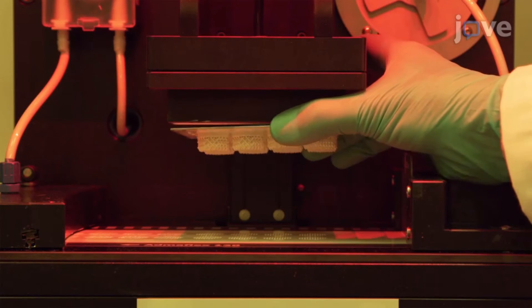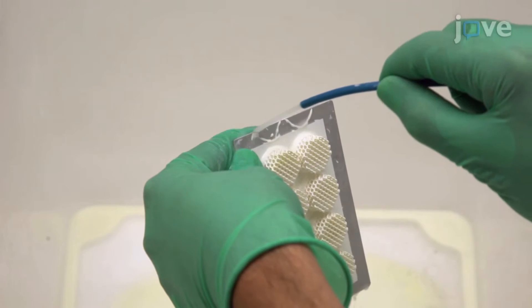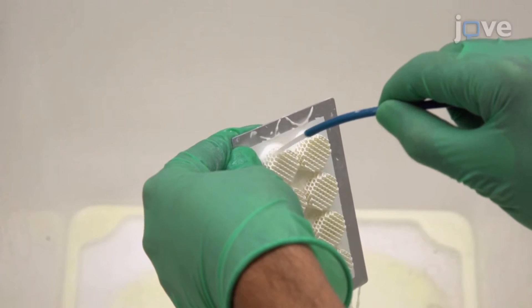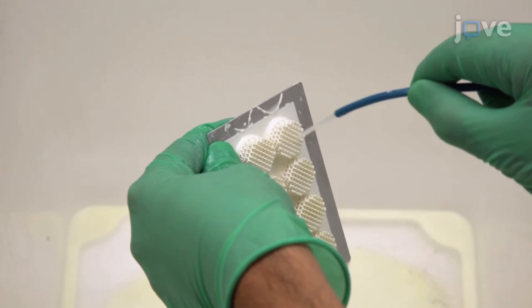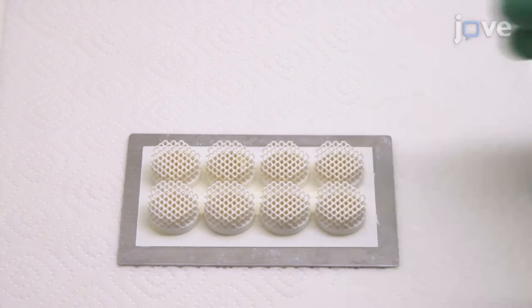When finished, turn off the vacuum while holding the printing plate to retrieve the component. Use isopropyl alcohol or another mild organic solvent to clean away any remaining slurry, and then let the component dry at room temperature in a ventilated area.